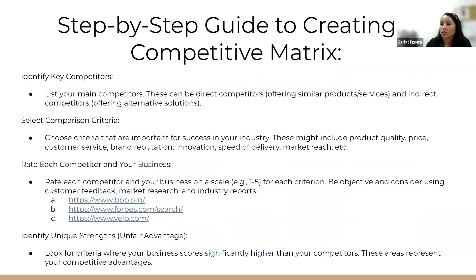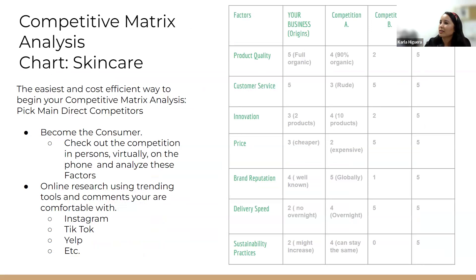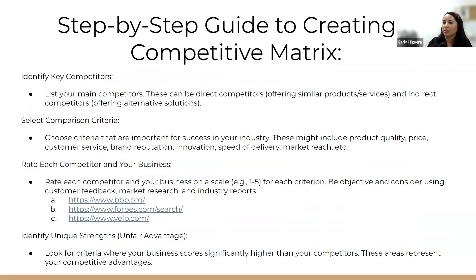This is what the chart would look like. I chose Origins as my business example — I think it's a great brand. To create the competitive matrix, we do four steps: list your competitors — don't compare yourself to huge brands right away, we want to sprint not run — select the comparison criteria such as price, quality, location, and so on.